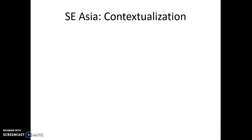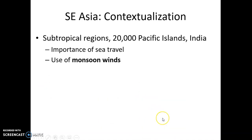Next up in our goal to address this global tapestry, different areas of the world from about 1200 to 1450, is Southeast and South Asia. Southeast Asia refers to land in subtropical Asia and also about 20,000 islands in the Pacific Ocean, and it's mainly India that we refer to as South Asia.